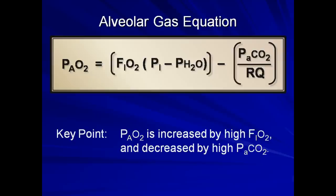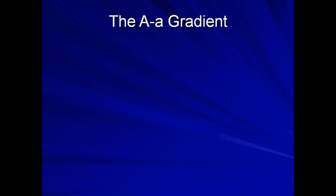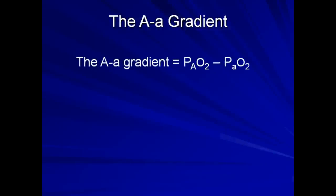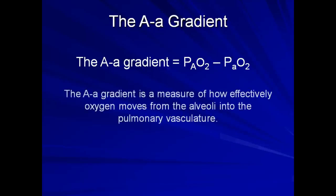The final topic of this lecture is the alveolar arterial gradient. Mathematically, this gradient is simply the difference between the alveolar and arterial oxygen tensions. Conceptually, the AA gradient is a measure of how effectively oxygen moves from the alveoli into the pulmonary vasculature. The higher the gradient, the more difficult oxygen exchange is.